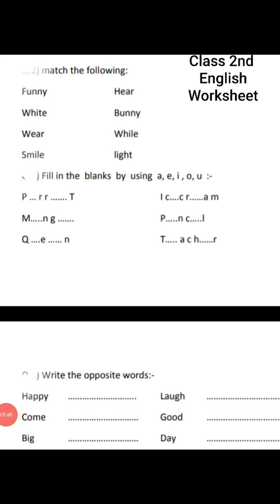Next question is: Fill in the blanks by using A, E, I, O, U. Do you remember what these are? These are the vowels. So put them in the blanks and make suitable words.